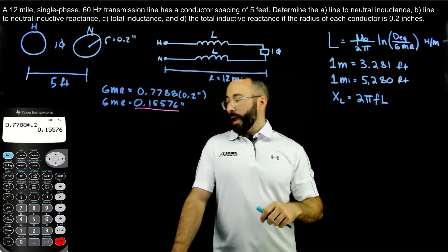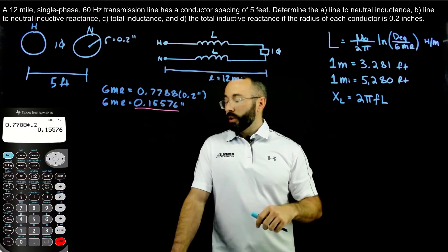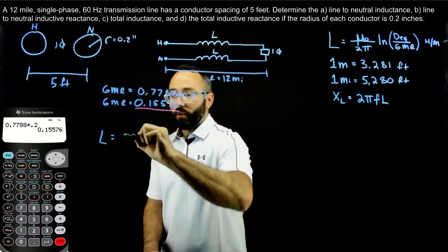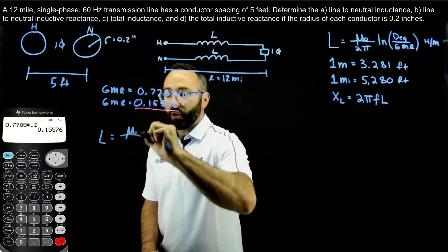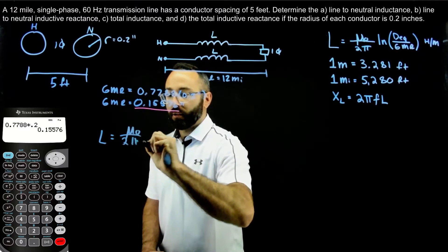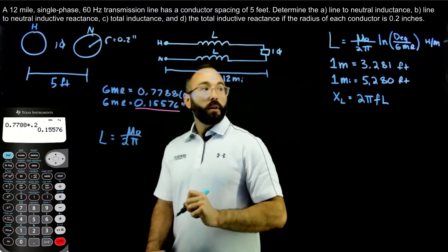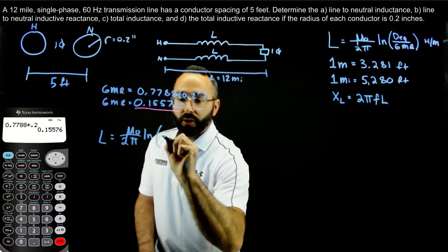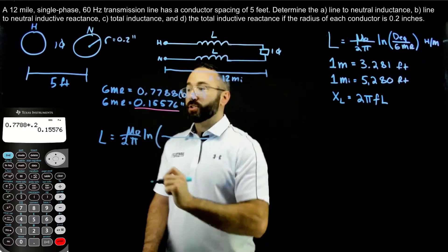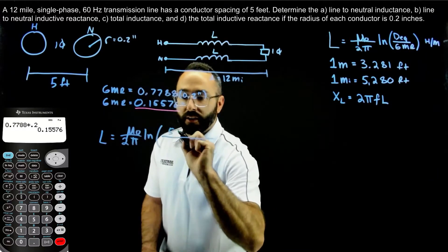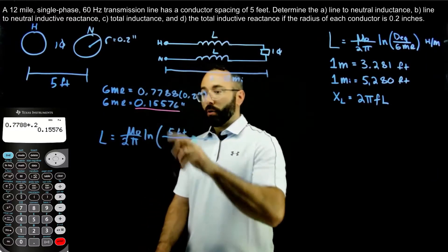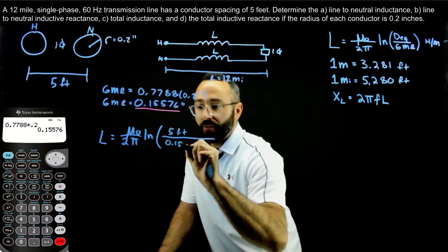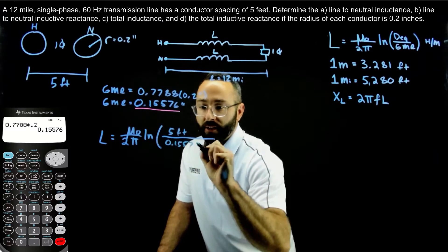Let's solve for A, the line-to-neutral inductance. The inductance L equals mu-naught divided by 2 pi, times the natural log of the DEQ — which for a single-phase transmission line is just our distance of 5 feet — divided by the GMR, which we found to be 0.15576 inches.